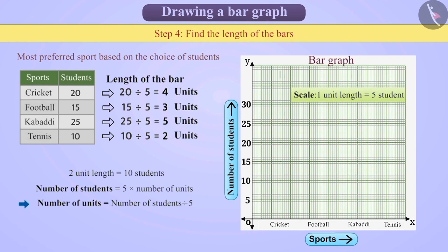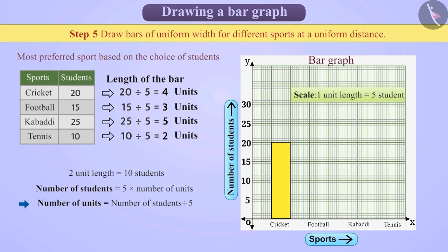Step 5: Now, we will draw the bars of uniform width for different sports at a uniform distance. For instance, for cricket, we will draw a bar of 4 unit length. Next, for football, we will draw a 3 unit length bar of the same width keeping uniform distance.